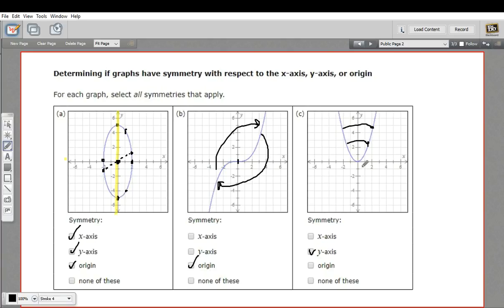It does not have origin symmetry. If you rotated this 180 degrees, it would be upside down from what it is now. So this one just has y-axis symmetry. That is how to determine if graphs have certain kinds of symmetries.